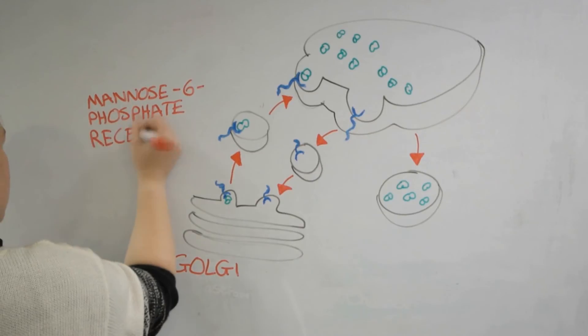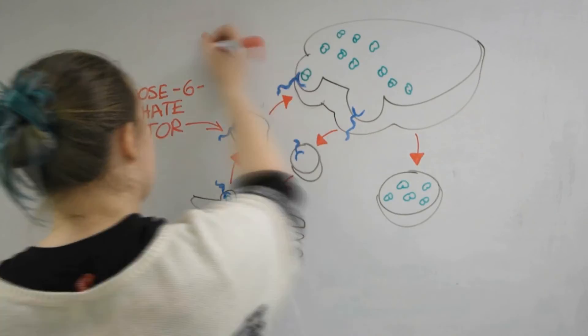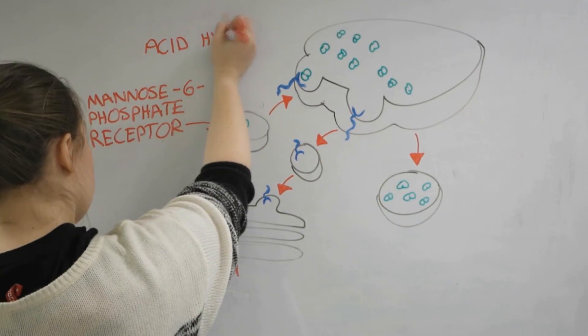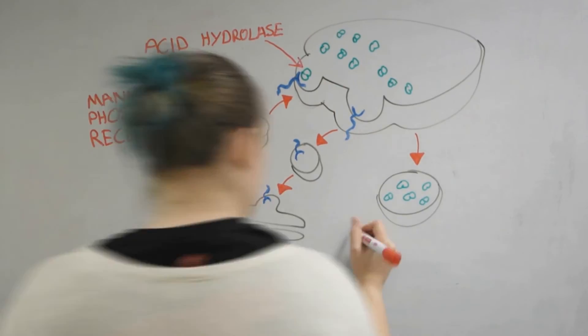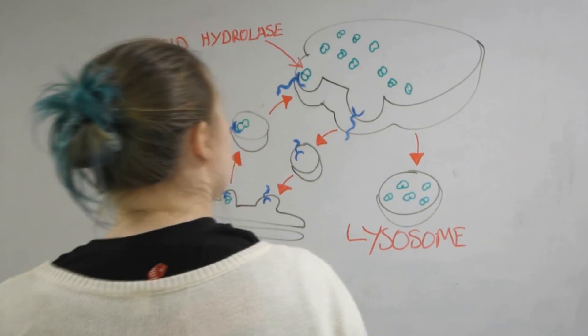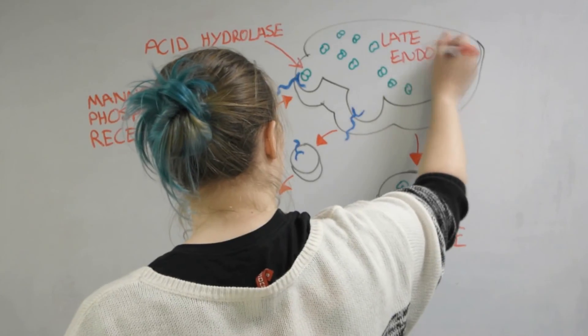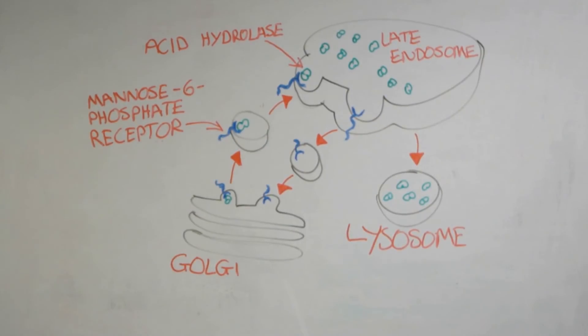The mannose 6-phosphate receptors are recycled back to the Golgi apparatus via transport vesicles. The lysosome is formed by budding off of the mature late endosome containing the acid hydrolase.